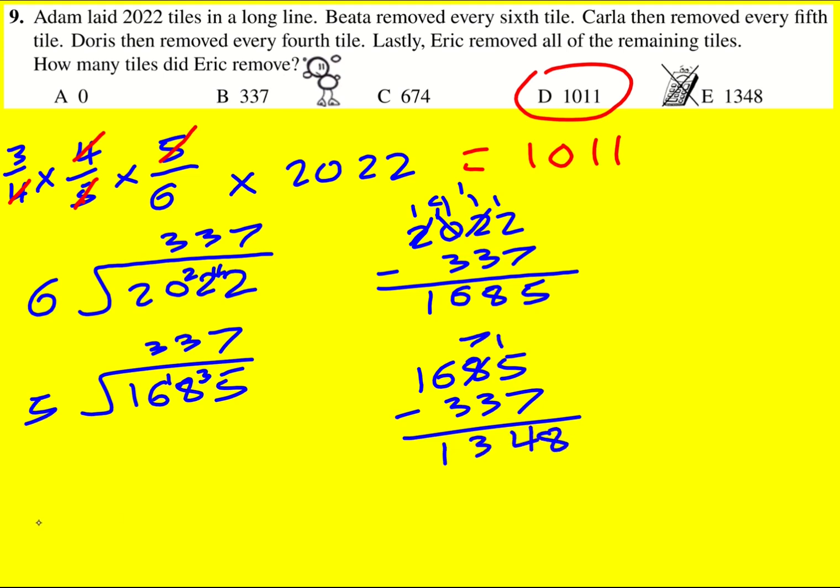So one three four eight, and then finally fours into that, three three seven again.